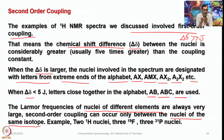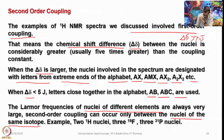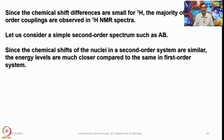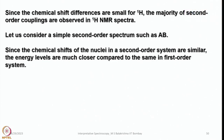Second order coupling can occur only between nuclei of the same isotope — for example, between two ¹H nuclei, three ¹⁹F, or three phosphorus nuclei. Since the chemical shift differences are very small for ¹H, the majority of second order couplings are observed in ¹H NMR spectra. Surrounding hydrogen, we have only one 1s electron which is spherically symmetrical, and hence chemical shifts span a very small range — 1 to 10 ppm.